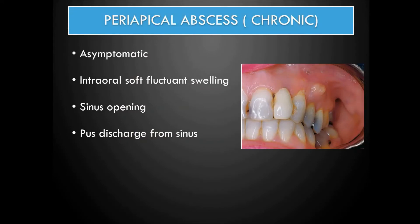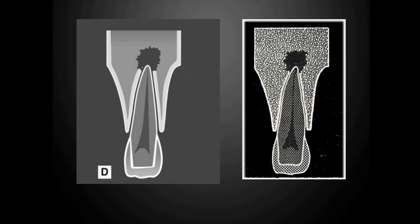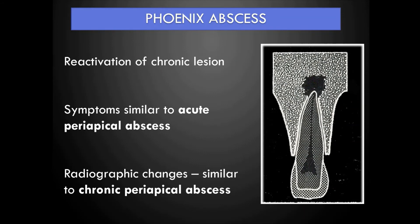When the abscess becomes chronic, the patient will be asymptomatic. There may be an intraoral small fluctuant swelling and a sinus opening may be seen through which pus is drained. On the radiograph there will be an ill-defined, hazy radiolucency, larger than what is seen in acute periapical abscess. This large ill-defined radiolucency at the periapical region, with loss of lamina dura, is suggestive of chronic periapical abscess.